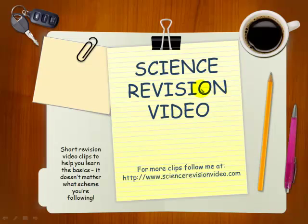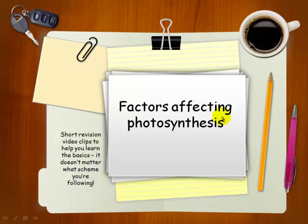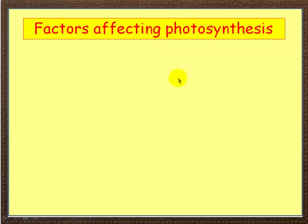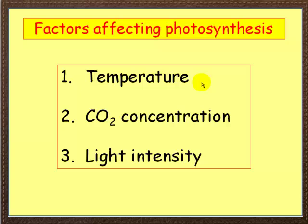Hello and welcome to this Science Vision video. In this video we're going to look at factors affecting photosynthesis. Hopefully by now you've looked at the photosynthesis video, and in this one we're going to see exactly what it is that can affect the rate of photosynthesis. Basically there are three factors: temperature, carbon dioxide concentration, and light intensity.